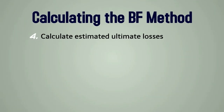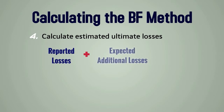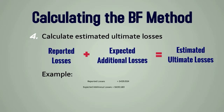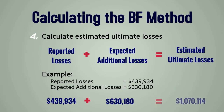In step four, we calculate the estimated ultimate losses as equal to the reported losses plus the expected additional losses. In this example, the reported losses are $439,934. The expected additional loss amount computed in the previous step is $630,180. So the estimated ultimate losses is $1,070,114.